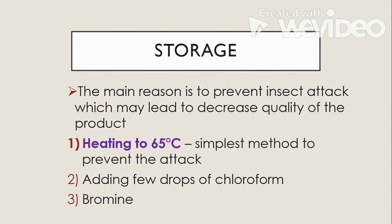Another step in the preparation of crude drugs is storage. The main reason is to prevent insect attack, which may lead to decreased quality of the product. Methods of storing include: heating to 65 degrees Celsius, which is the simplest method and effective especially for insect eggs not affected by insecticides; adding a few drops of chloroform to kill insect eggs; and adding bromine to prevent insect attack.